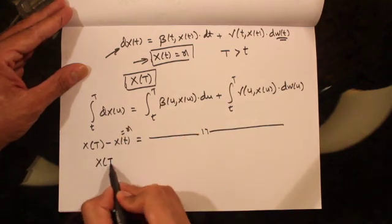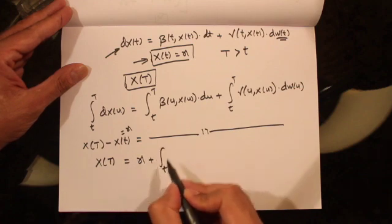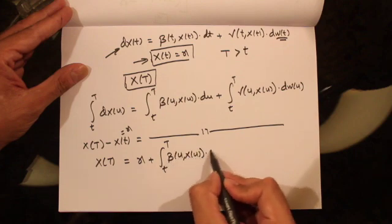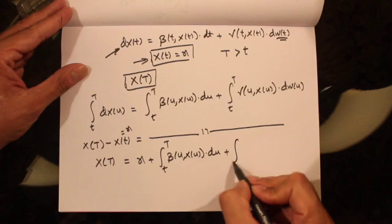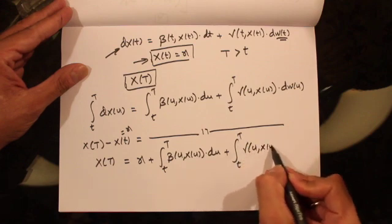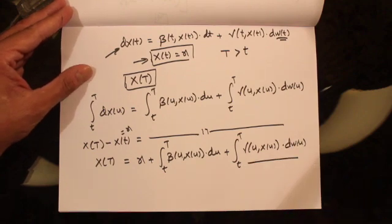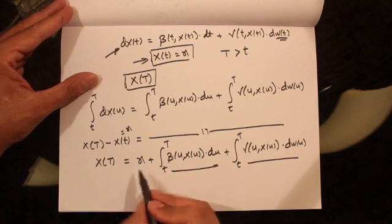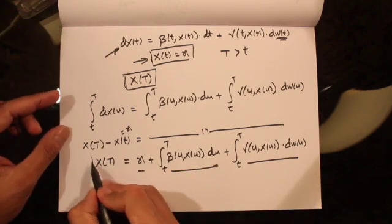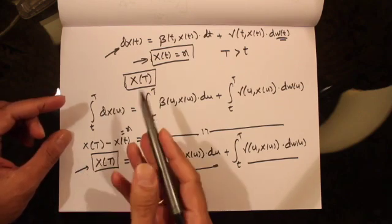Since x(t) is the initial condition and equals x, x(T) becomes x plus the integral from t to T of beta(u, x(u)) du plus the integral from t to T of gamma(u, x(u)) dW(u). This last integral is our Itô integral, the middle term is the Lebesgue integral, and x is the initial condition. This is how we solve for x(T) — the solution of the SDE with initial value x.